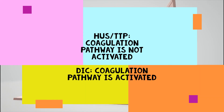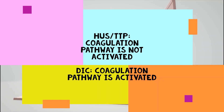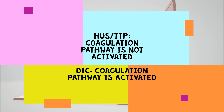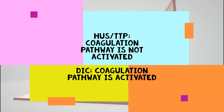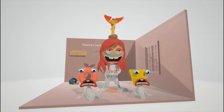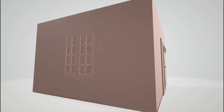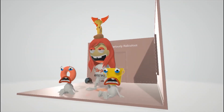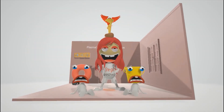Just a final high-yield point: the coagulation pathway is not activated in hemolytic uremic syndrome or in thrombotic thrombocytopenic purpura. This distinguishes it from DIC, in which the coagulation pathway is activated. That is our scene. I hope you enjoyed. Please subscribe — it means a lot. Take care.